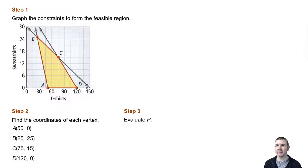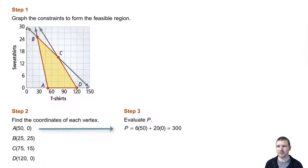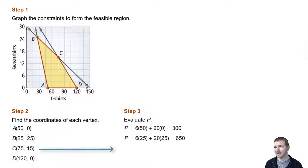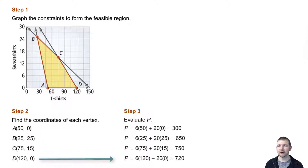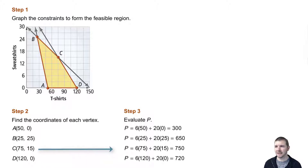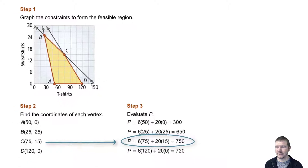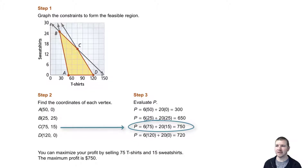Step 3: Evaluate P by substituting the ordered pairs at each vertex of the feasible region. P at A is 300, P at B is 650, P at C is 750, and P at D is 720. So the point C, the ordered pair (75, 15), maximizes profit. You can maximize your profit by selling 75 t-shirts and 15 sweatshirts. The maximum profit is $750.